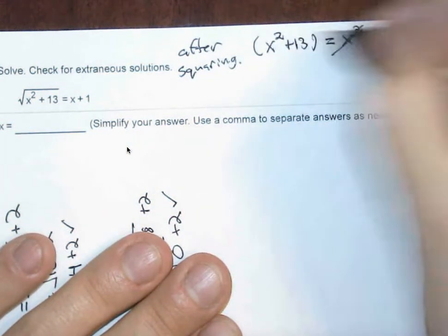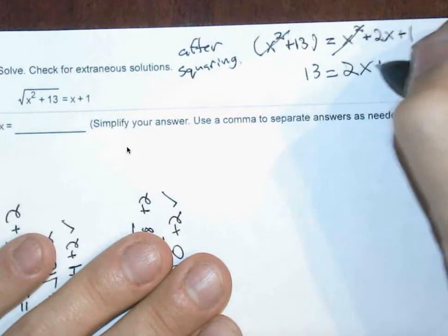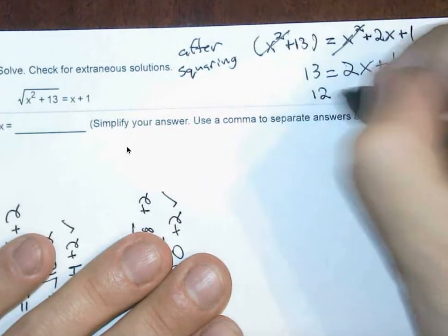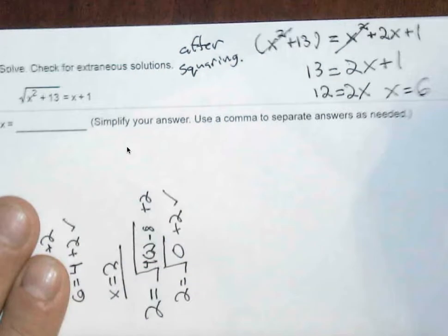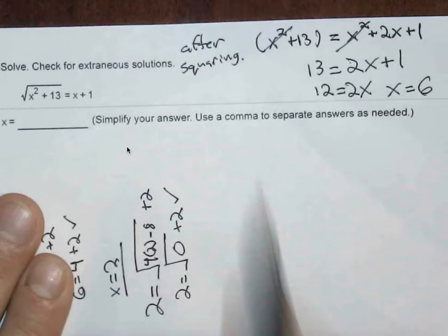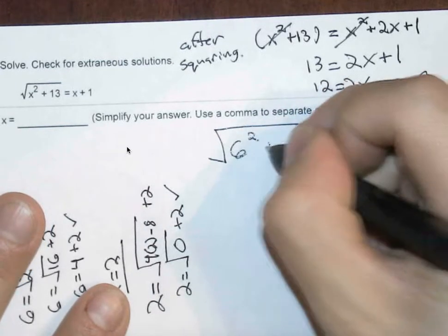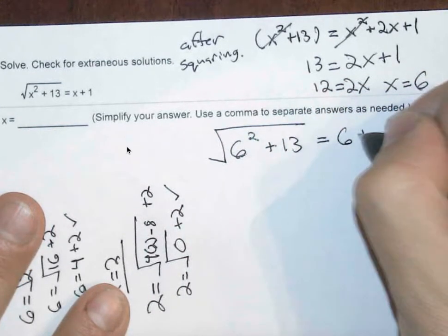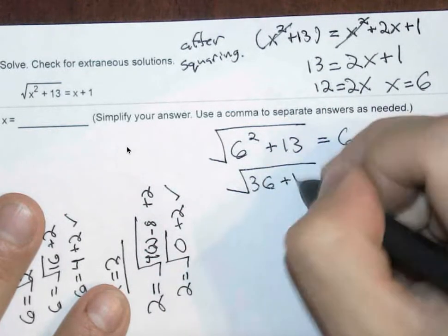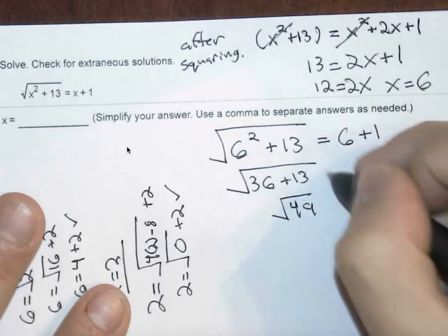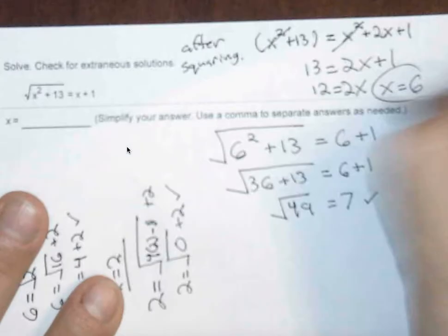So x squareds can cancel. You're left with 13 equals 2x plus 1. When you eventually take it further, x is going to be equal to 6. And I asked to check for extraneous solutions, so we'll do just that. When 6 is squared, we're supposed to add 13. This is supposed to be equal to 6 plus 1. Square root of 36 plus 13 is the square root of 49, which should be equal to 6 and 1, which is 7. This checks out. So x equals 6.